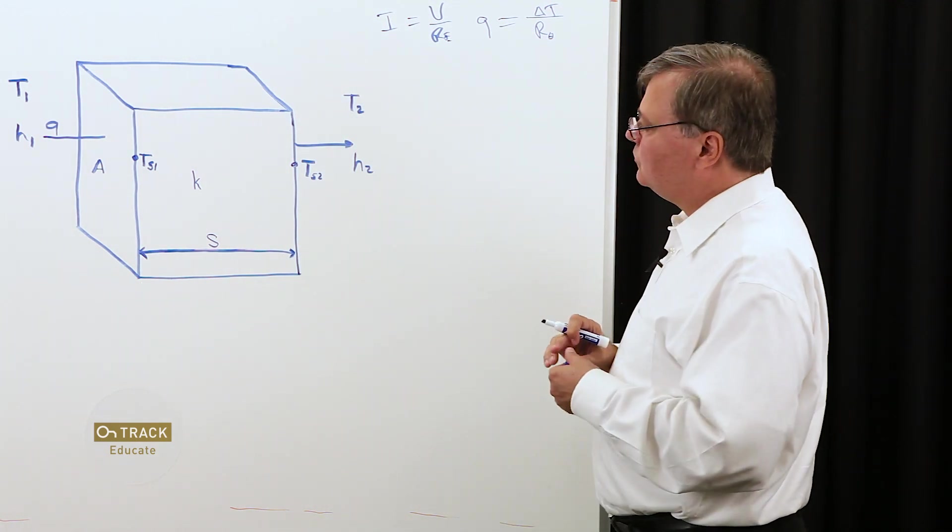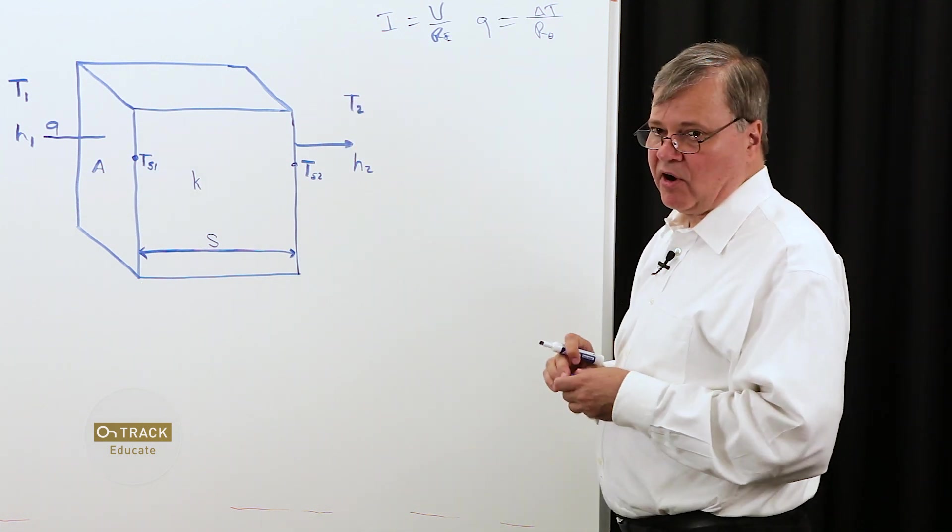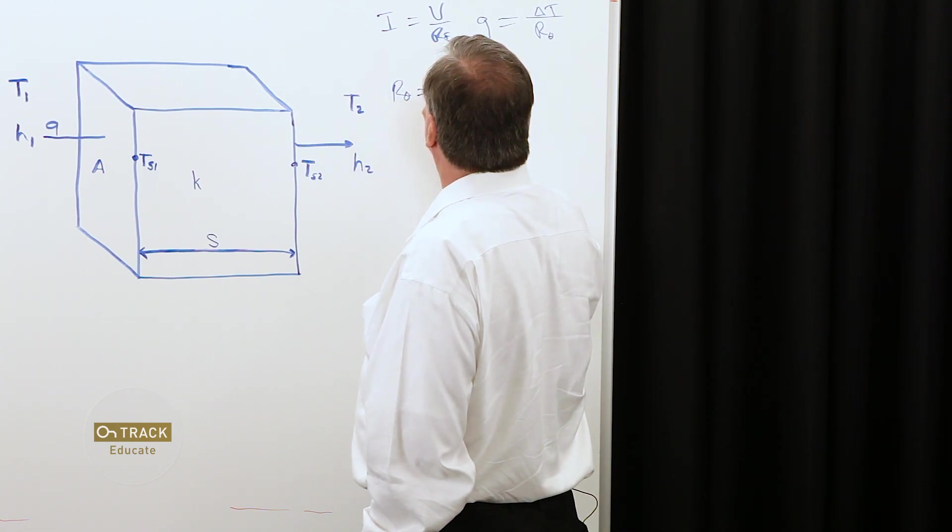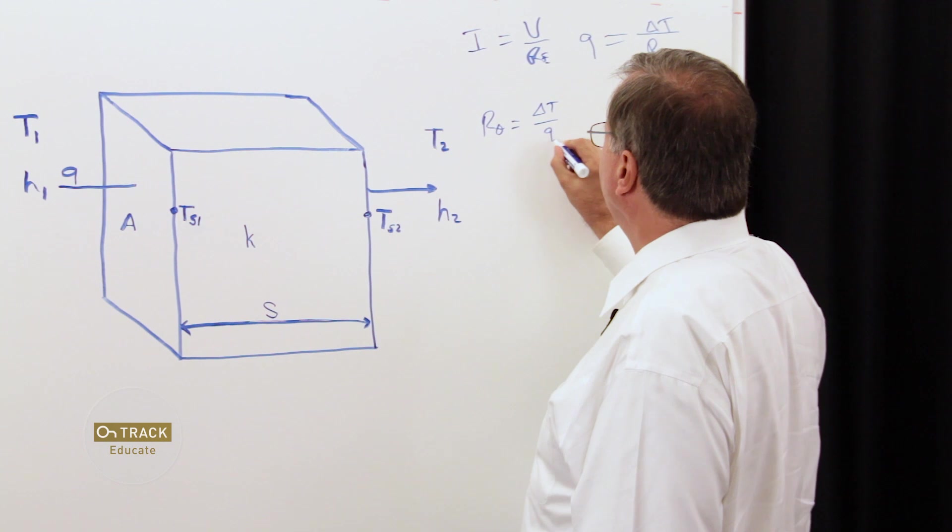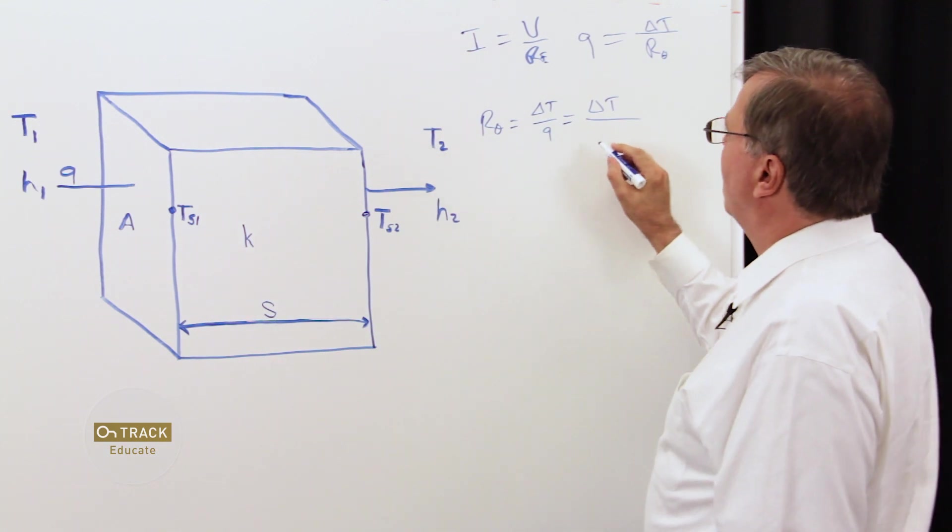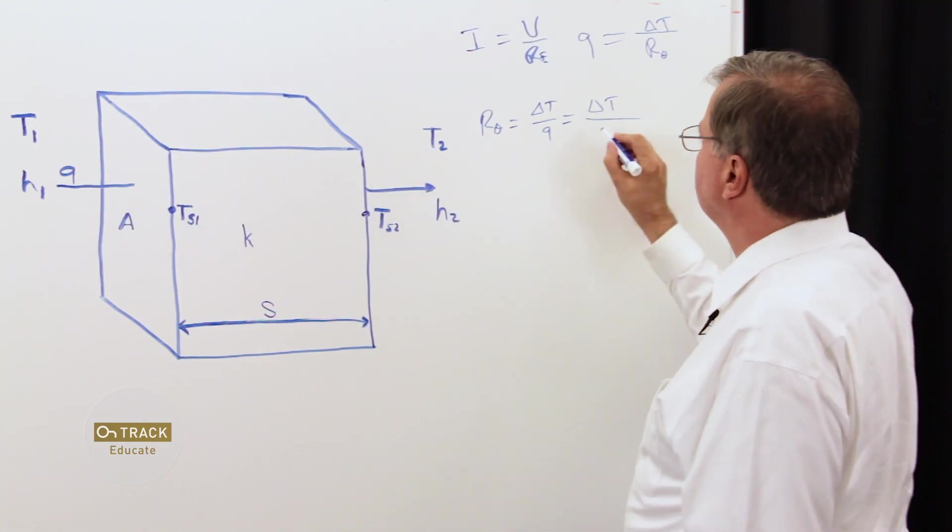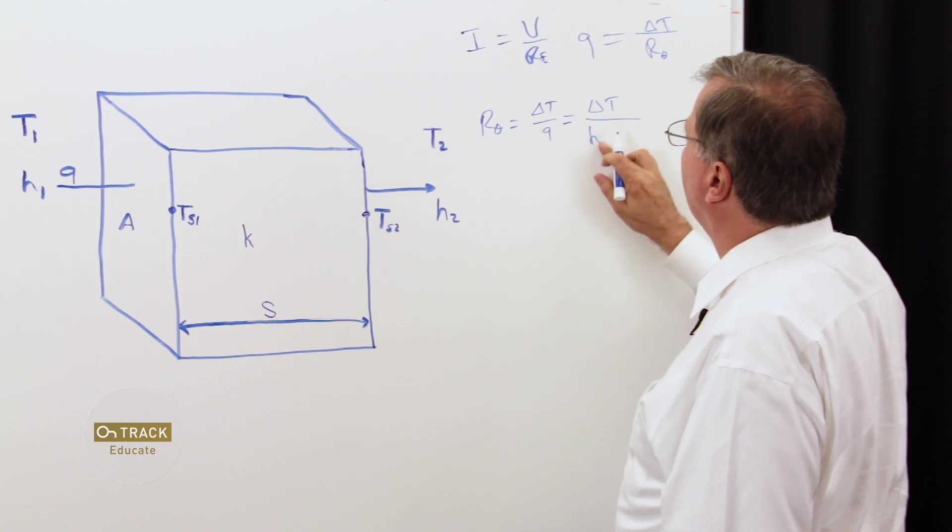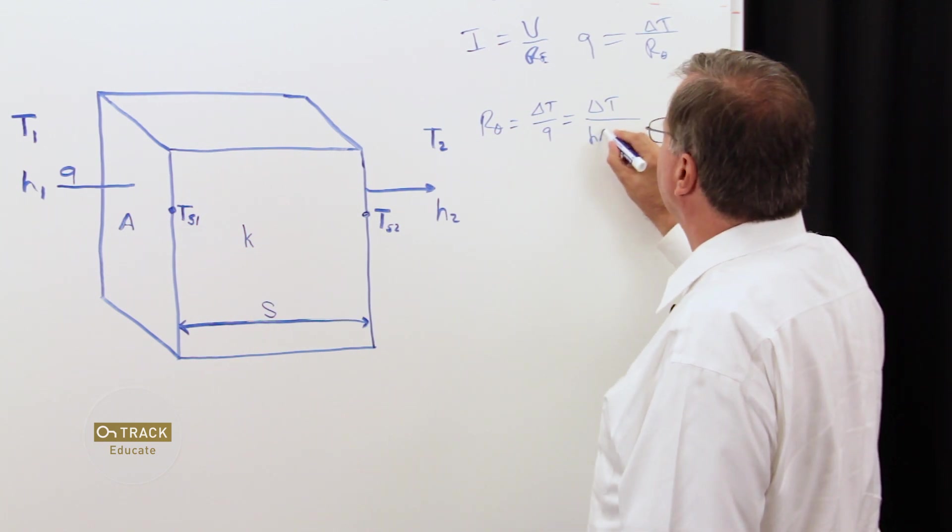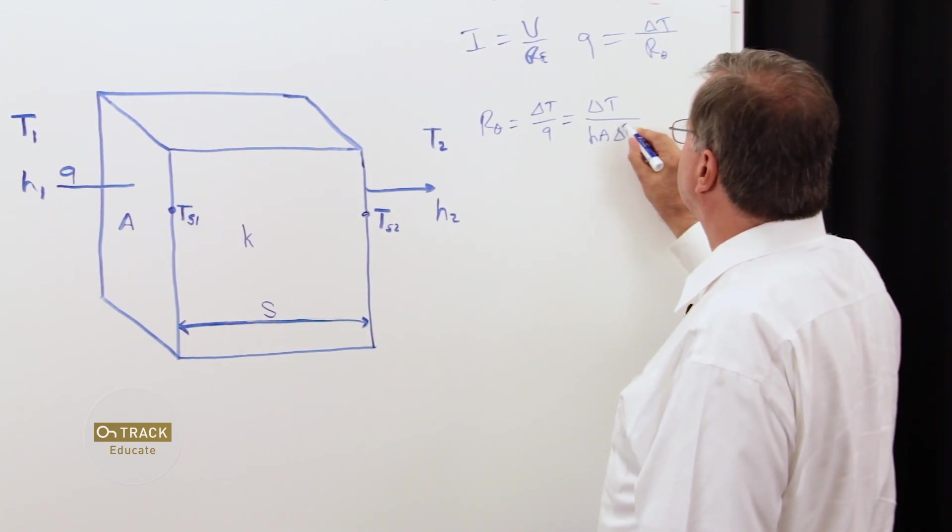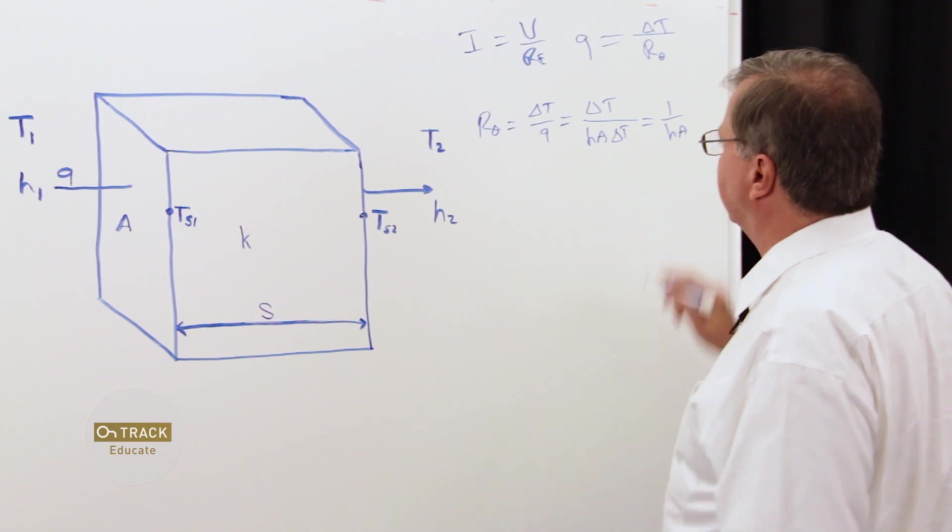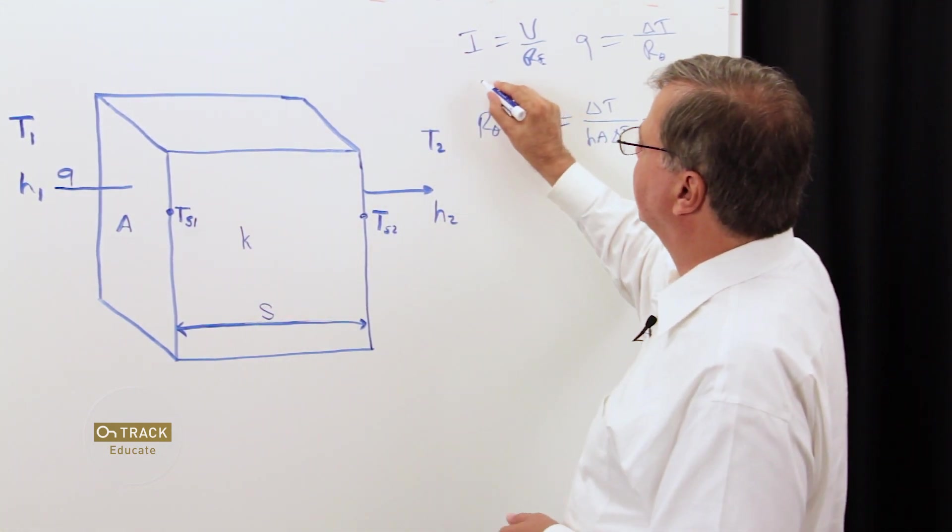So, let's look at the thermal resistance of our first convective area. We'll start out with first principles. R theta is equal to delta T over Q, which is equal to delta T, our forcing function, over our heat transfer coefficient H1, or keeping it more general, H times the area over delta T, which then is simplified down to 1 over HA. And this is for our convective model.